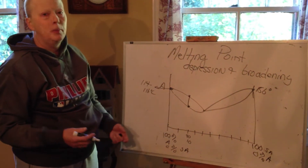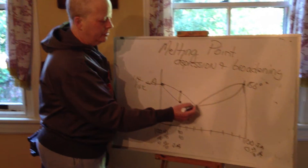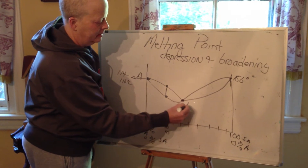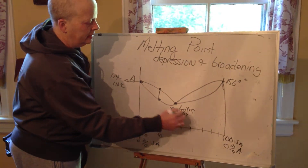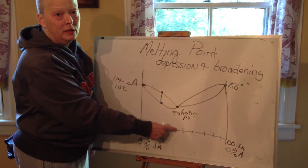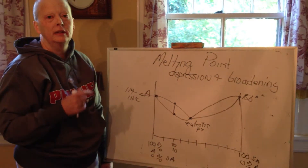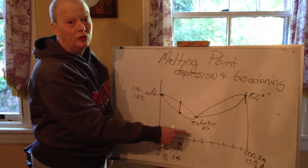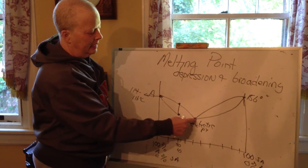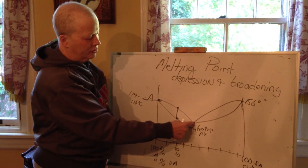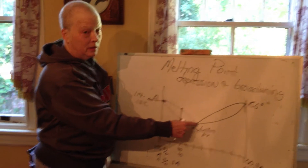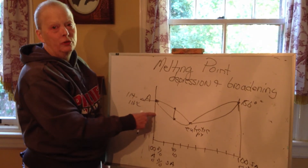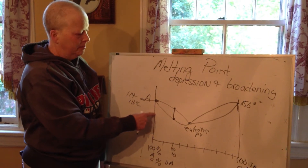There are a couple of important points on this diagram. The first is called the eutectic point, as you've probably read in your lab book. The eutectic point corresponds to a eutectic composition. A eutectic point, eutectic sample, or eutectic mixture — that's what they're really called — has a point in the diagram which is interesting because it has a sharp melting point, and it has a particular melting point associated with it called the eutectic melting point.